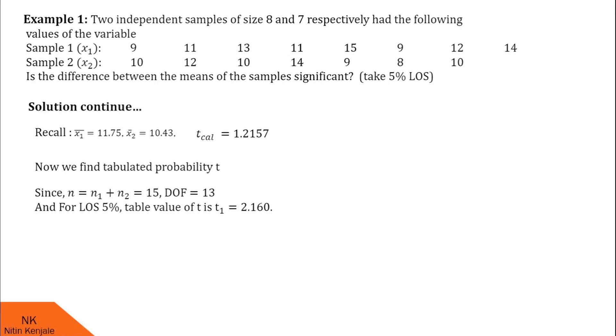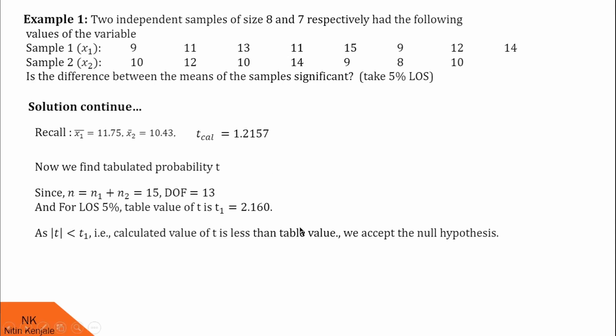Now finally, we compare this table value with the calculated value. We see the mod of the calculated value is less than this table value. Therefore, we accept the null hypothesis, and we are saying there is no significant difference between the means of two samples.